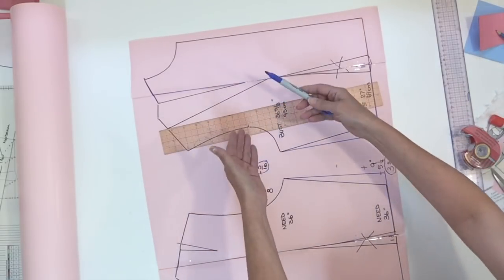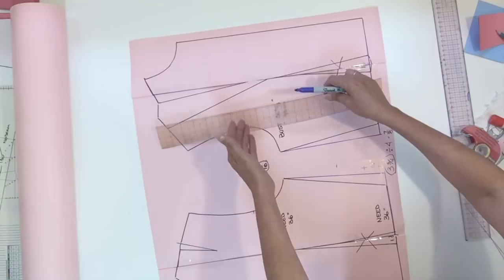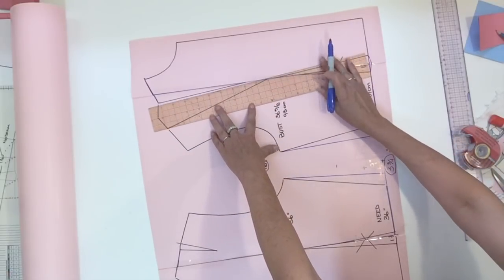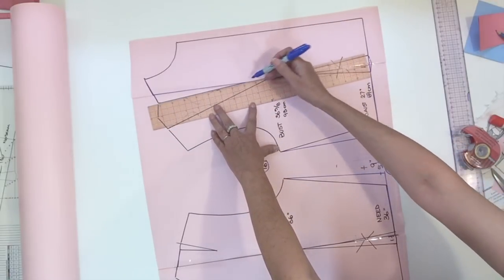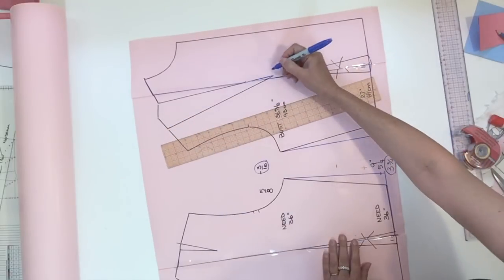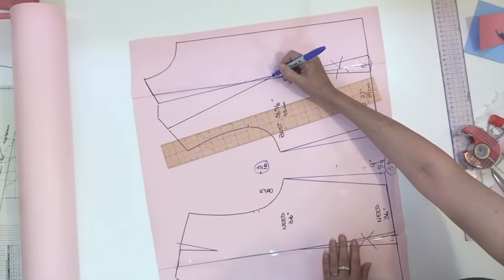Finally in the front you're going to need to get your original pivot so you could just extend both sides of the dart and that's going to give you your new pivot.